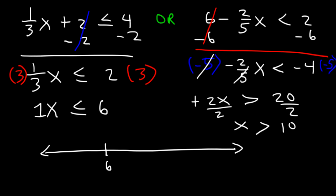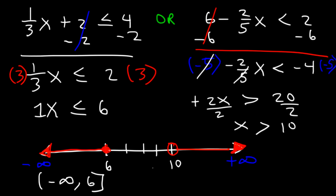Let's say 6 and 10 are on our number line with numbers in between. Since x is less than or equal to 6, we have a closed circle at 6 and shade towards the left. Since x is greater than 10 but not equal to it, we have an open circle at 10 shaded towards the right. In interval notation, the answer is negative infinity to 6 with a bracket at 6 — since it's a closed circle — union 10 to infinity with parentheses, since we have an open circle. Always use parentheses for infinity symbols.